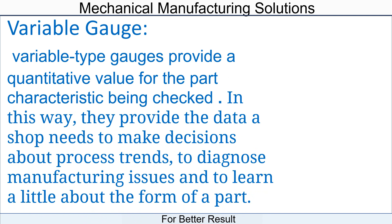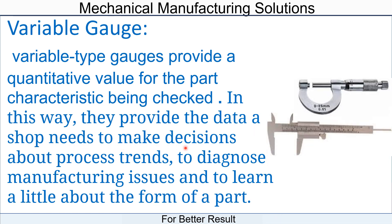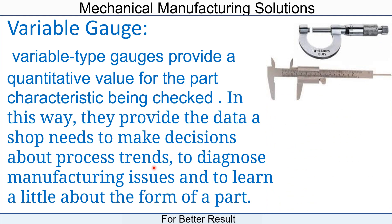Now let's see the variable gauge. Variable type gauges provide a quantitative value for the part characteristics being checked. In this way they provide the data a shop needs to make decisions about process trends, to diagnose manufacturing issues, and to learn about the form of a part.